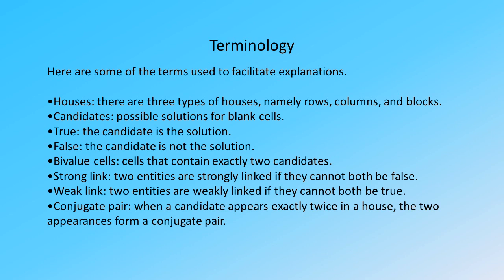Strong link: two entities are strongly linked if they cannot both be false. Weak link: two entities are weakly linked if they cannot both be true. Conjugate pair: when a candidate appears exactly twice in a house, the two appearances form a conjugate pair.